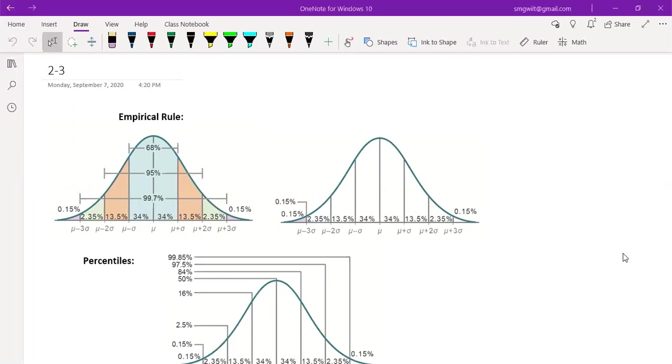Remember that the empirical rule itself is that 68, 95, 99.7, right? These numbers pertain to 68% of the data is within one standard deviation of the mean, 95% is within two standard deviations of the mean, and 99.7% is between three standard deviations and the mean. Those numbers are the empirical rule.